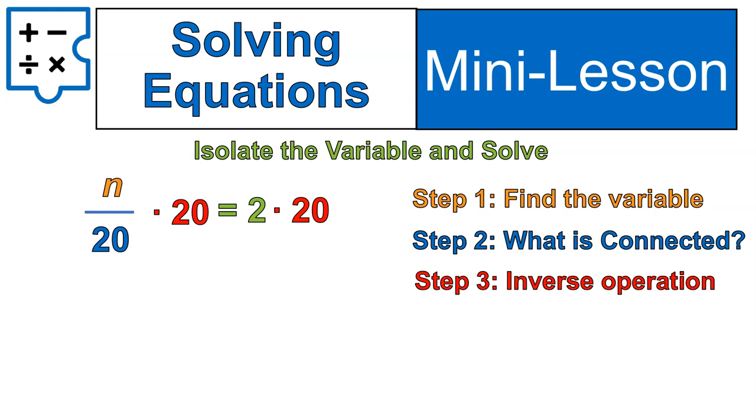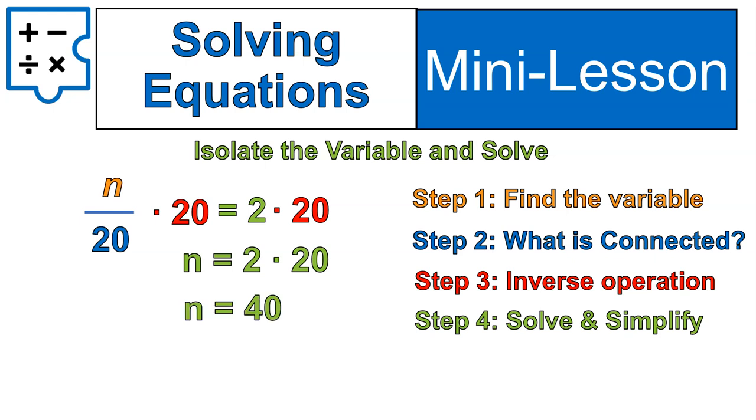Divided by 20 times 20, those are inverse, so they undo each other or cancel each other out. So we're left with n by itself on the left, and we have 20 times 2, or 2 times 20 on the right. 2 times 20 is 40, and that's it. 40 is the answer to this question.